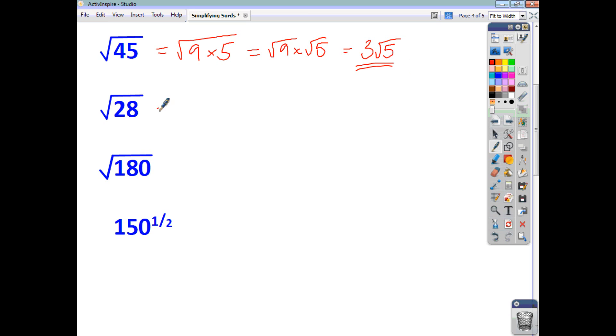Root 28. Remember square factors? 1, 4, 9, 16, 25. Well, 4 goes into 28. So it's the square root of 4 times 7, which is root 4 times root 7, which is 2 root 7. And that's your final answer, because you can't break down 7. There are no square factors of 7.